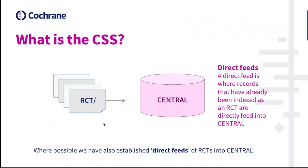Machine learning in this context is the building of machine learning classifiers from high-quality training data that can distinguish between different classes of things — i.e. RCTs from non-RCTs. In addition to these three techniques, where possible we've also established a number of direct feeds of RCTs from these external sources, where a record has already been indexed as an RCT and it then gets directly fed into CENTRAL.